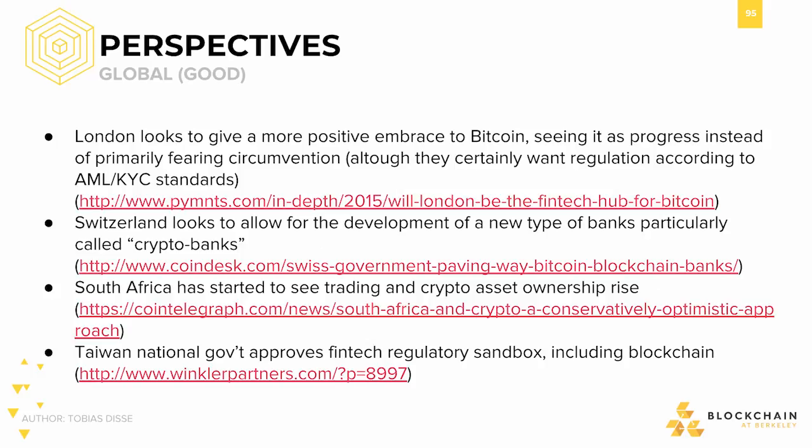To put cryptocurrencies and blockchain further into perspective, let's take a look around the world at some of the popular responses to this new technology. Though Bitcoin and cryptocurrencies may be seen as a threat to established institutions, London particularly looks to give a more positive embrace to Bitcoin, seeing the technology as progress for finance. Switzerland, already well known for its crypto valley in the city of Zug, has looked into development of a new type of bank called crypto banks — physical locations to do with your crypto what you'd typically do with your fiat money. The South African Reserve Bank, or SARB, established a fintech task force to monitor developments in the cryptocurrency and fintech space, attempting to balance cryptocurrency and blockchain development within the nation.